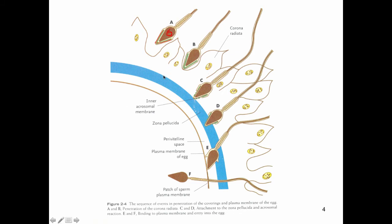In order for the sperm to fertilize the egg, it has to pass through two barriers. The first is the corona radiata — the follicular cells that remained surrounding the oocyte when it was released from the ovary, which can be composed of multiple layers of cells. The second barrier is the zona pellucida, the gel-like membrane that covers the oocyte.